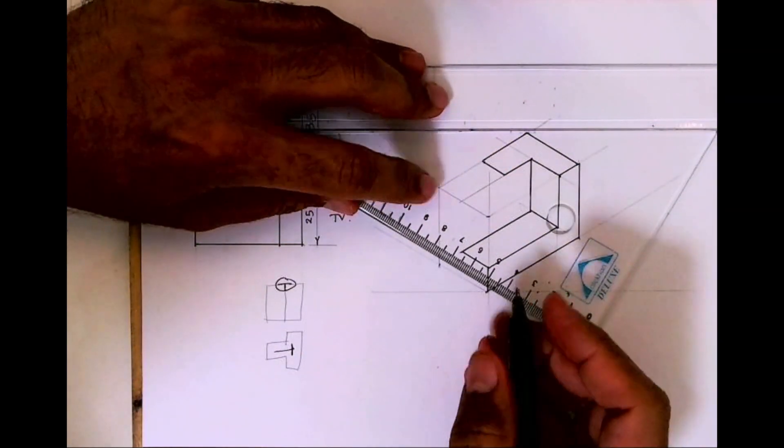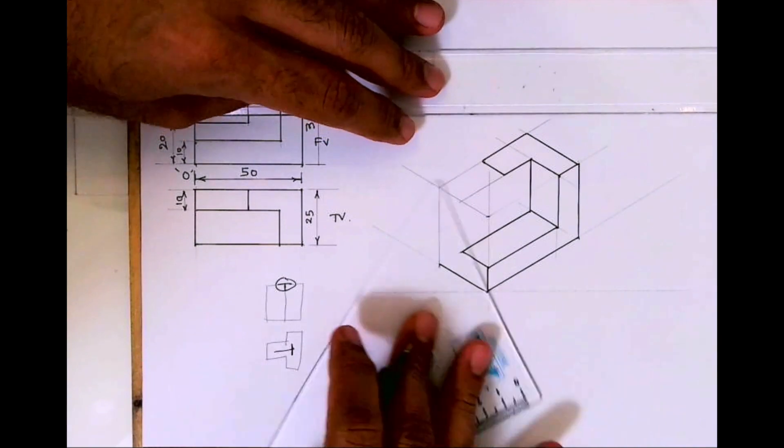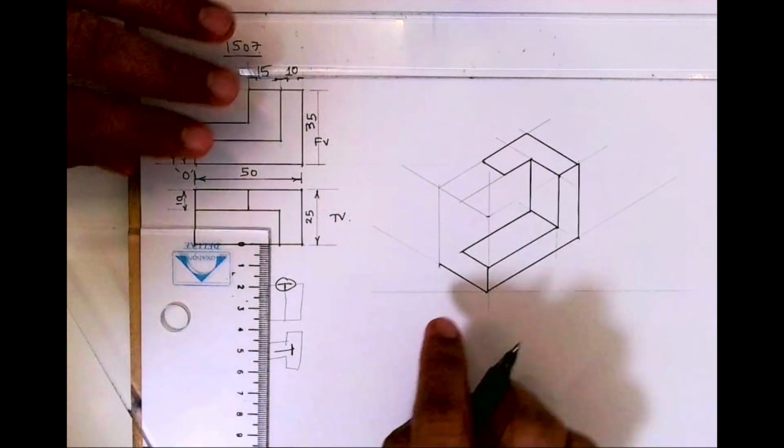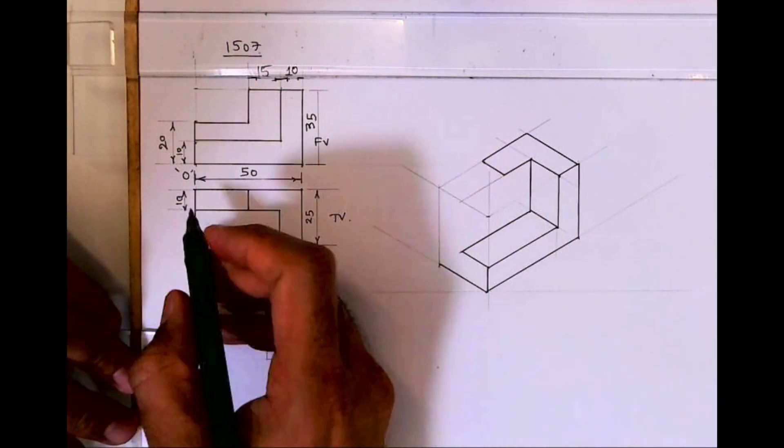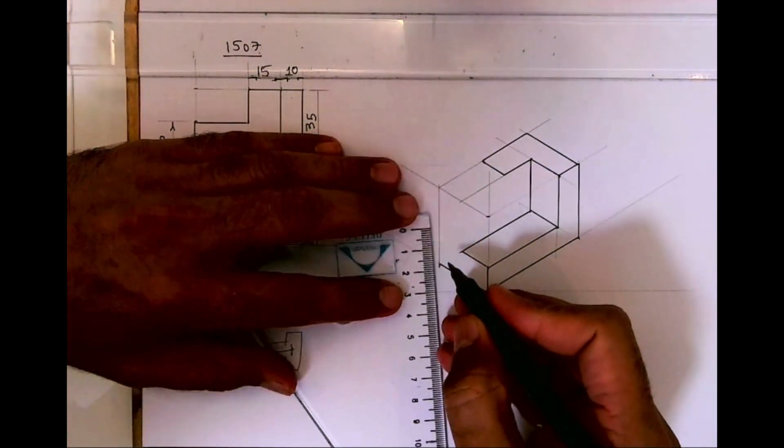So we are done with part one. Now we need to see part two, which we can see in front view. See this, this is done. This height is 20, so from here I can take 20.